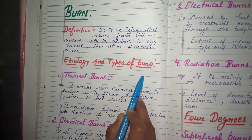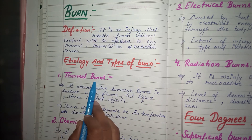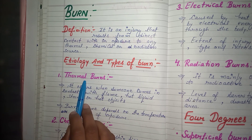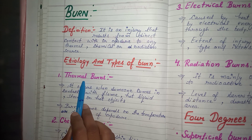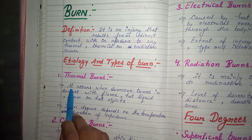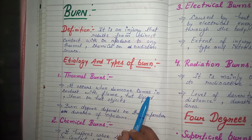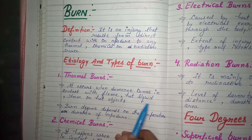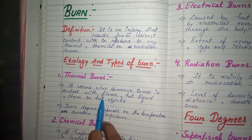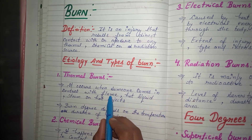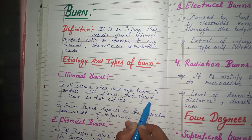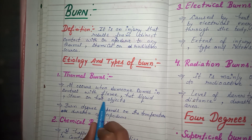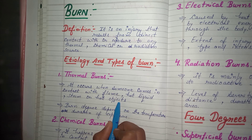The first type is thermal burn. It is clear from the name — it occurs when someone comes in contact with flame, hot liquid, steam, or a hot object. When that contact causes skin injury, we call that type a thermal burn. The cause and type can be defined by the same name.